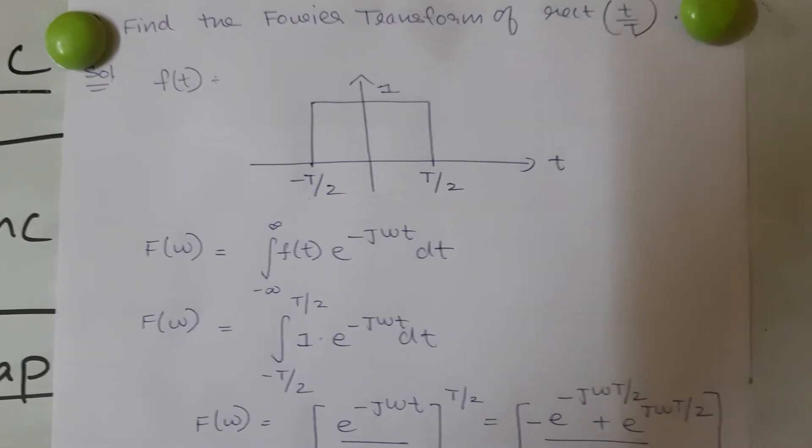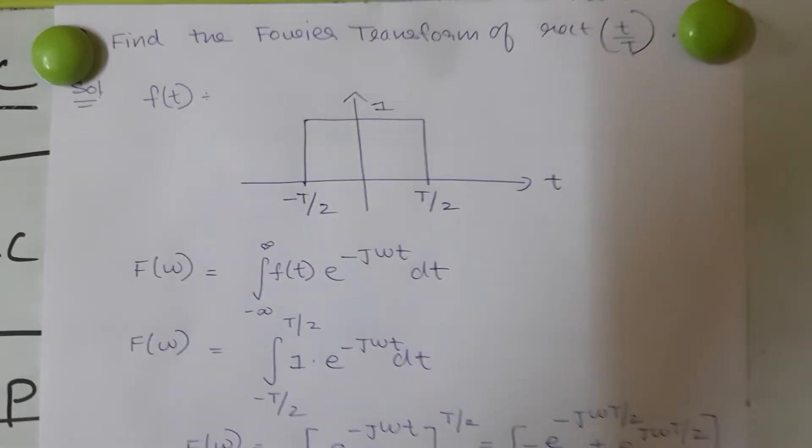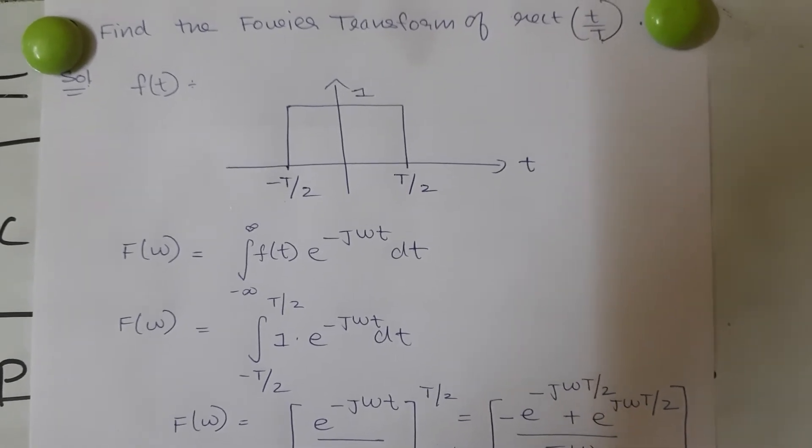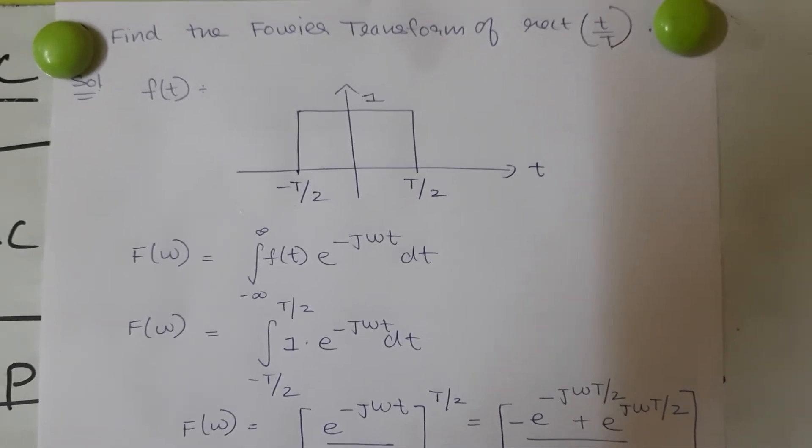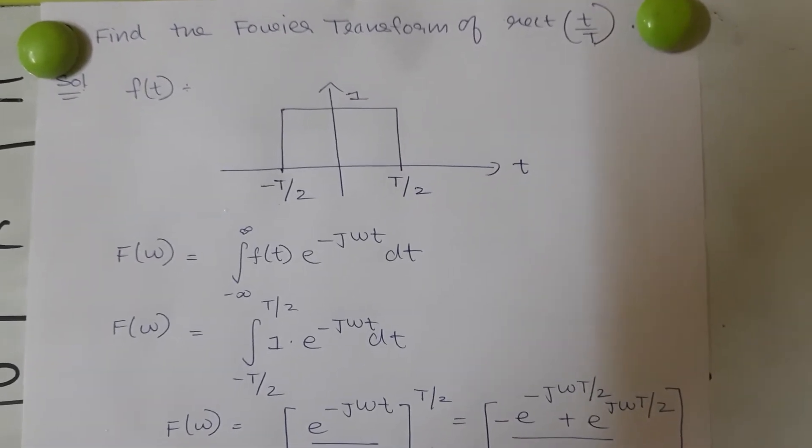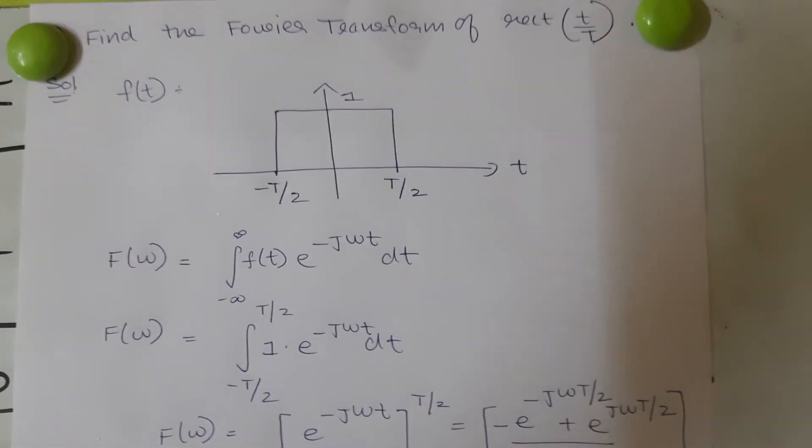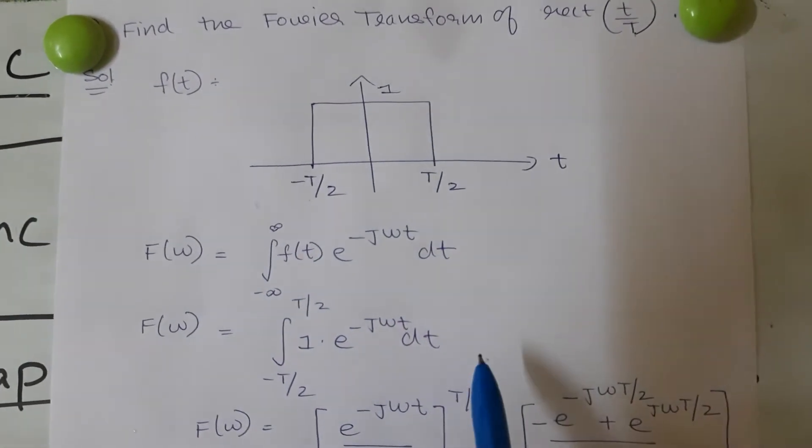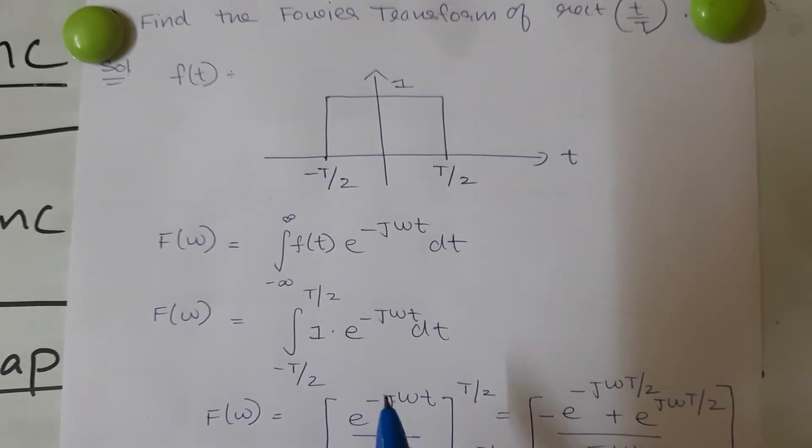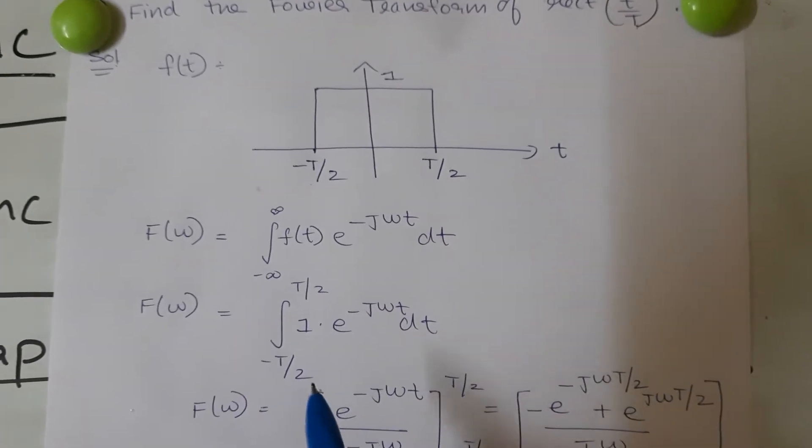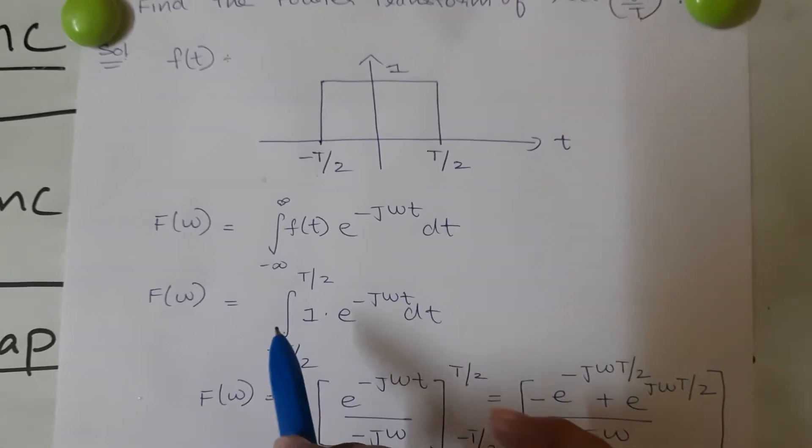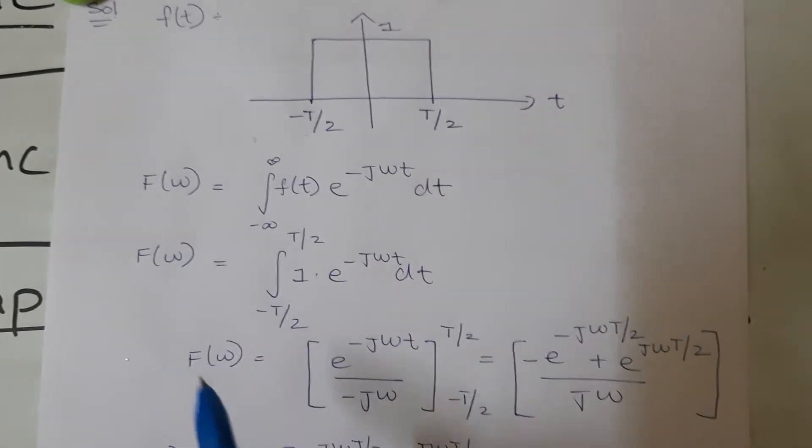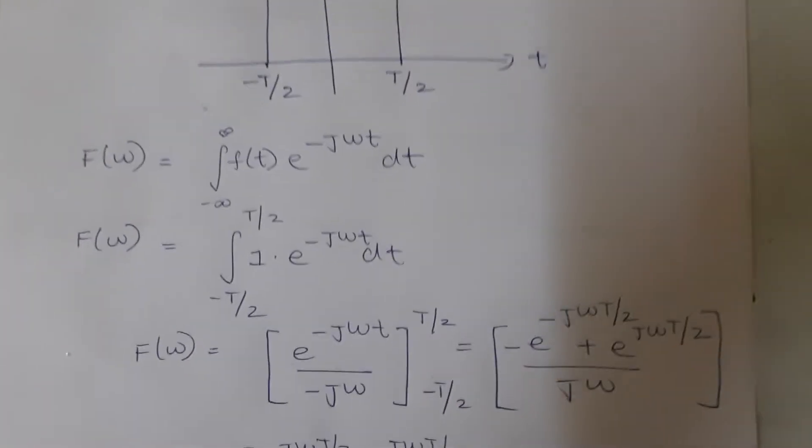Now we know the formula to find the Fourier transform. F of omega is equal to integral minus infinity to infinity f of t e to the power of minus j omega t dt. Now here the signal varies from minus tau by 2 to tau by 2 with the value 1. So my equation now is integral minus tau by 2 to tau by 2, 1 into e power minus j omega t dt. After integrating and substituting the values this is what I get.